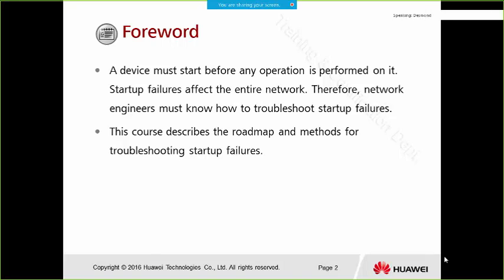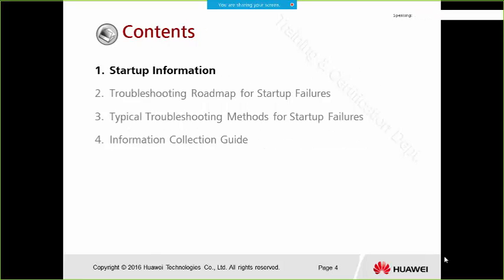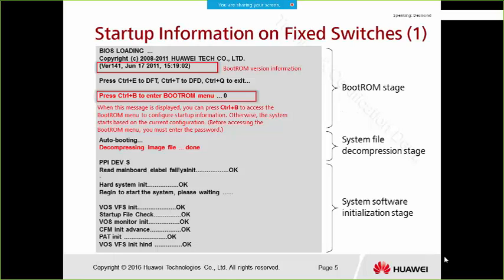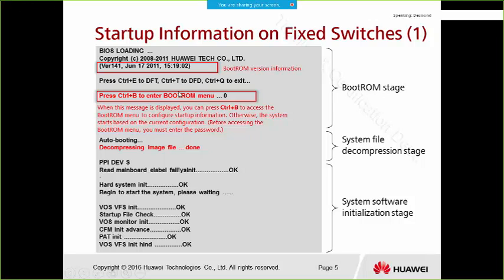There are two types of switches: fixed switches and modular switches. For fixed switches, when we use our console cable connected to the console port, these are the startup information that the device will show us. First, it will have several stages.